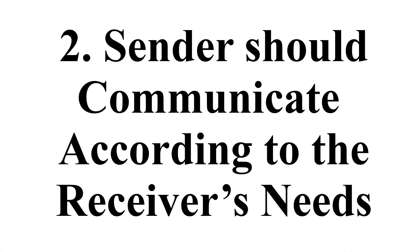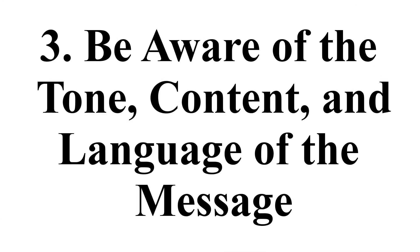The second way to overcome the barrier is: the sender should communicate according to the receiver's need. The sender should frame the structure of the message not according to his own level or ability alone, but also keep in mind the level of understanding and environment of the receiver. Third: be aware of the tone, content, and language of the message. The message should be transmitted in a clear, precise, and easy language. The tone should not hurt the feelings of the receiver, and technical words should be avoided.